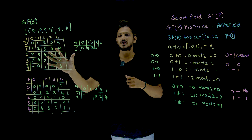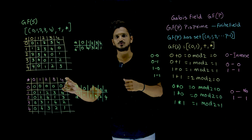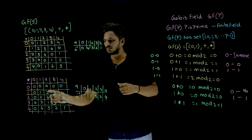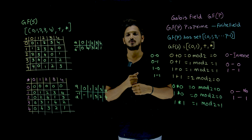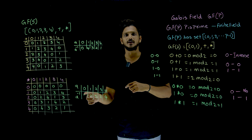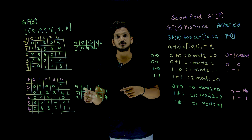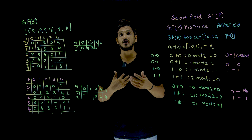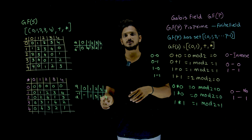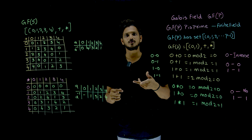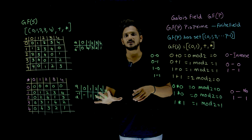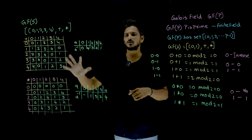Plus operation is satisfied. For multiplication, the closure operation: 0 multiplied by anything is 0, modulus 5 is 0. 1 multiplied by 2 is 2, modulus 5 is 2. The identity element is 1. Inverse elements: for 0, no inverse exists. For 1, inverse is 1: 1 multiplied by 1 is 1. For 2, inverse is 3: 2 multiplied by 3 is 6, modulus 5 is 1. For 3, inverse is 2. For 4, inverse is 4: 4 multiplied by 4 is 16, modulus 5 is 1. So inverse elements exist for all elements except 0, and it satisfies the field properties.